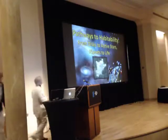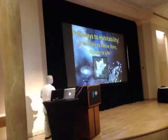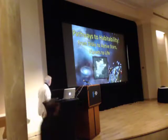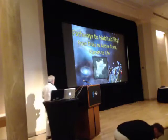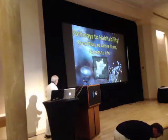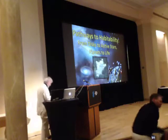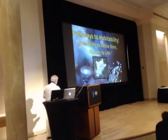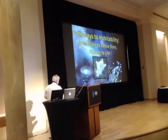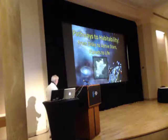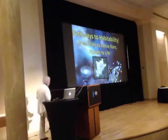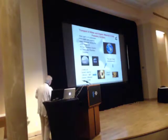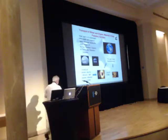We have in Austria a big project now: Pathways to Habitability — from Discs to Active Stars and Planets to Life. This is a collaboration of many universities in Vienna, and what you can see here is the University of Vienna in a nice big park. When you come close to Vienna, come to see us. It's very nice here.